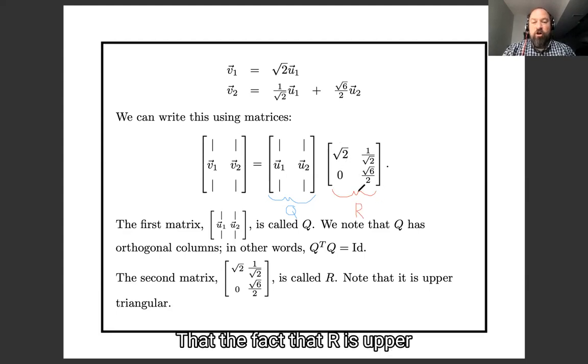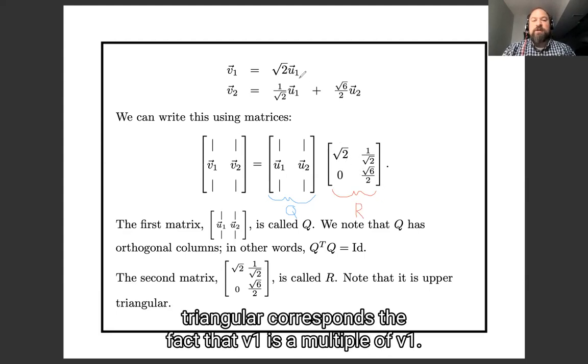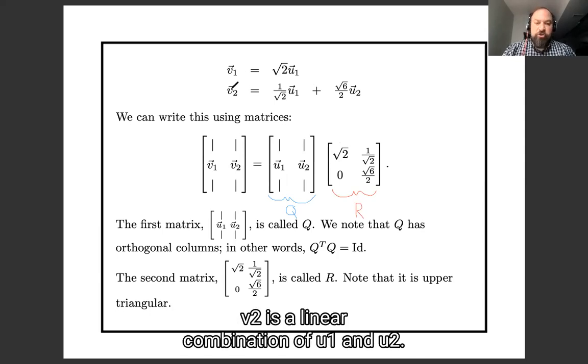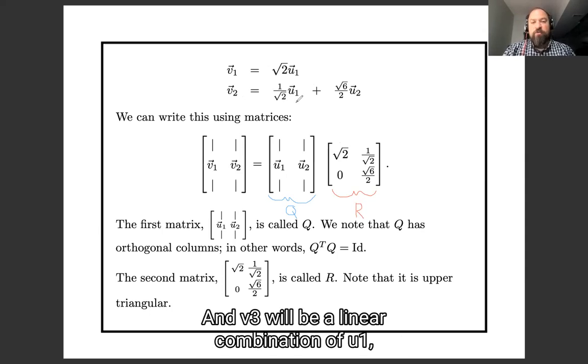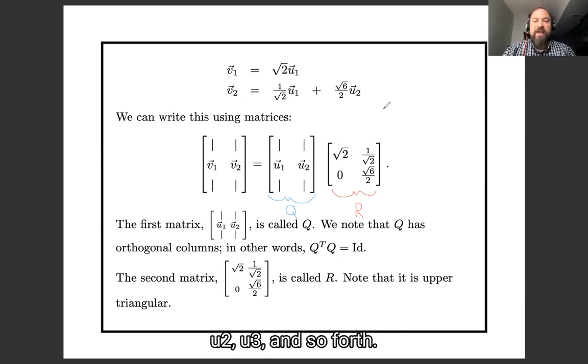And this second matrix over here, this matrix we're going to call R, and notice that R is upper triangular. The fact that R is upper triangular corresponds to the fact that v1 is a multiple of u1, v2 is a linear combination of u1 and u2, and if there were v3 it would be a linear combination of u1, u2, and u3, and so forth.